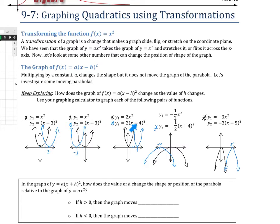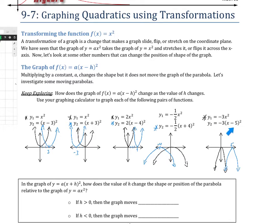When we add or subtract on the inside it moves left or right. If we subtract 3 it moves right, if we add 3 it moves left. For example, y equals 2x squared is a narrow graph, and y equals 2 times x minus 4 squared moves it right. Negative one-half x squared flips it upside down and makes it wider — we saw that in our last lesson.